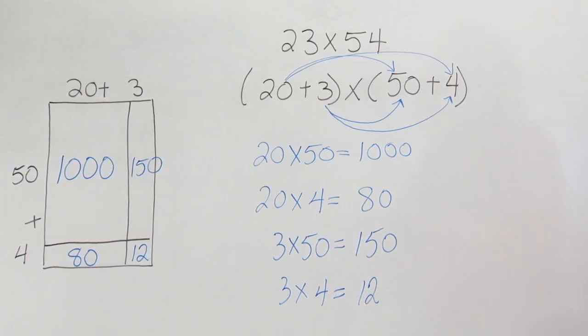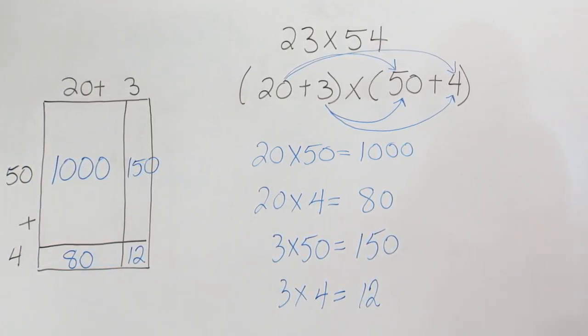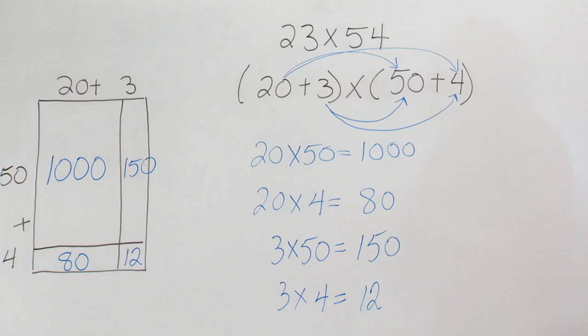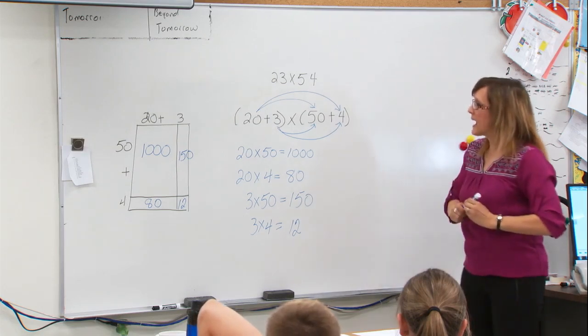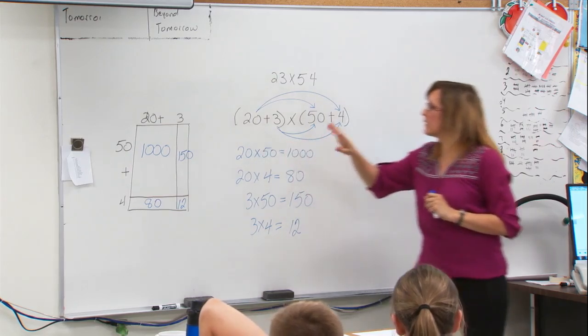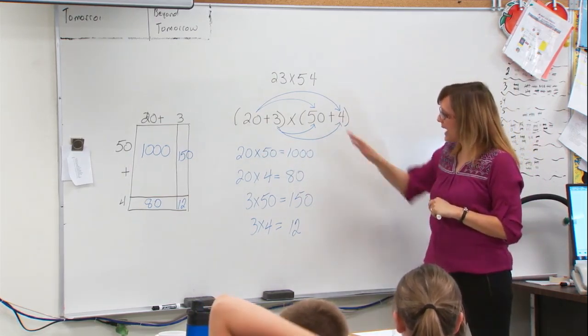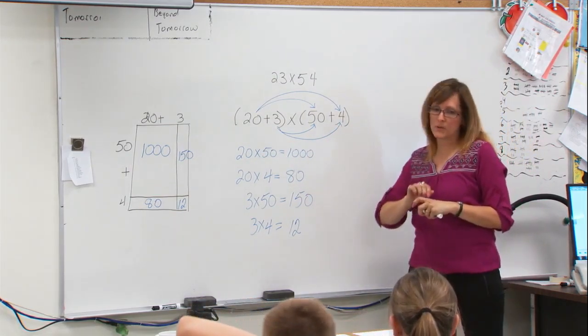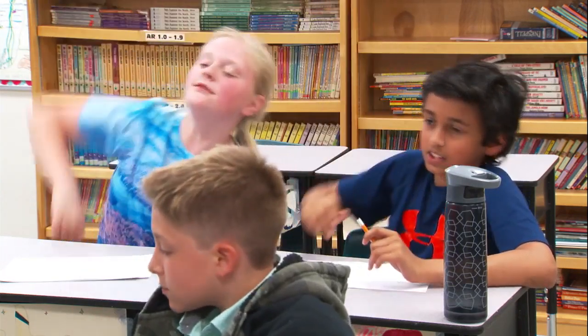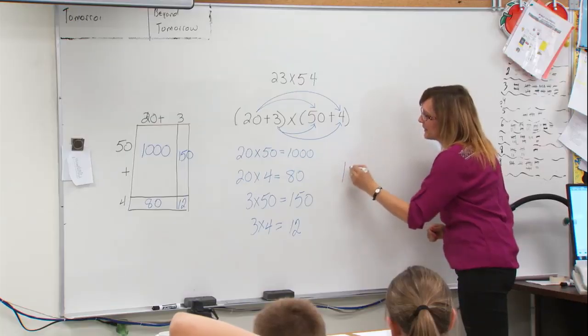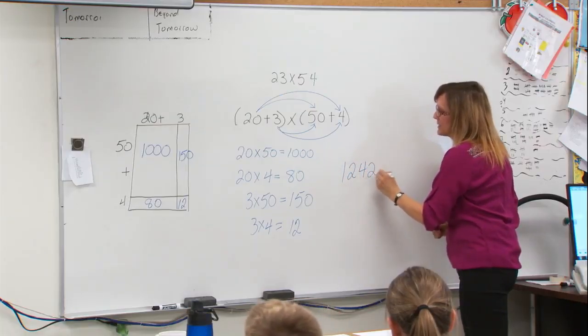To complete the question, we also need to multiply the simple equations of 20 times 4, 3 times 50, and 3 times 4. Once we have all the parts of the array completed, or all the parts of the question multiplied, we can add them all together to get the total. Does anyone know what the total would be? Bruisa? 1,242. Perfect. Good job. 1,242.